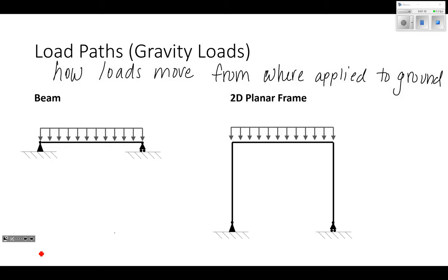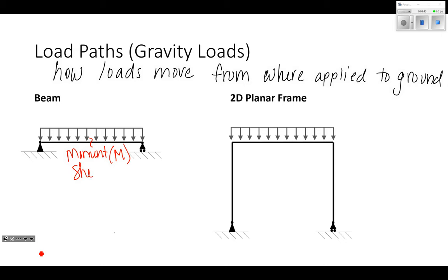First, let's talk about a beam — what types of forces are in a beam or columns, and what types of reactions. A beam with a distributed load is going to cause bending moment (M) and shear (V). The reactions are going to be vertical and scaled with the applied load.